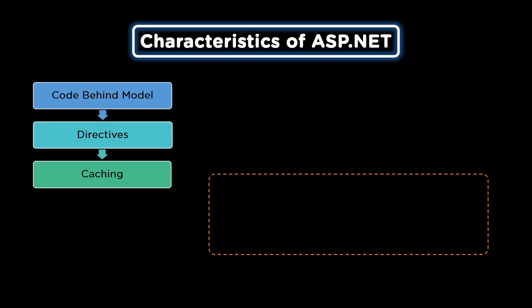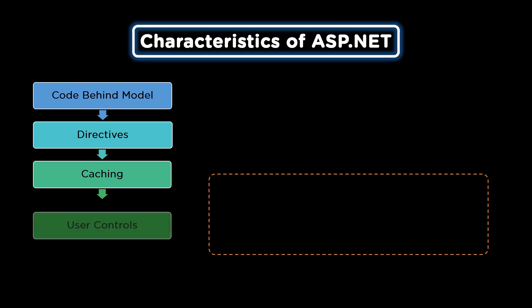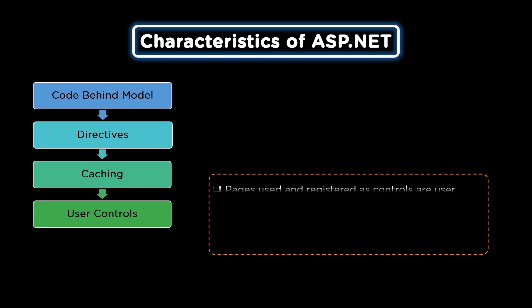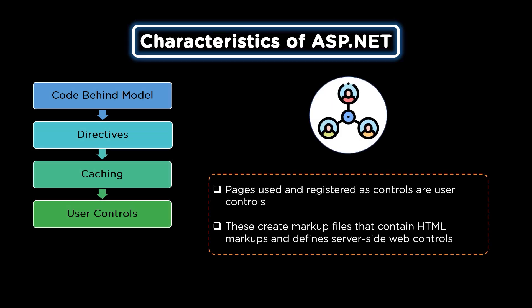The fourth characteristic is user controls. The sections of pages that are registered and used as page controls are called user controls. User controls also create markup files that contain static HTML markup and server-side web controls.